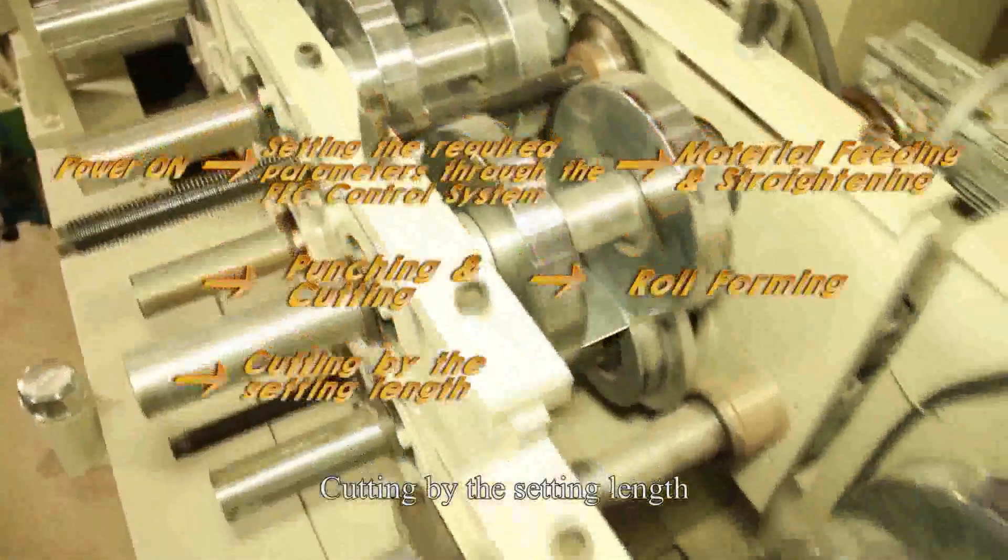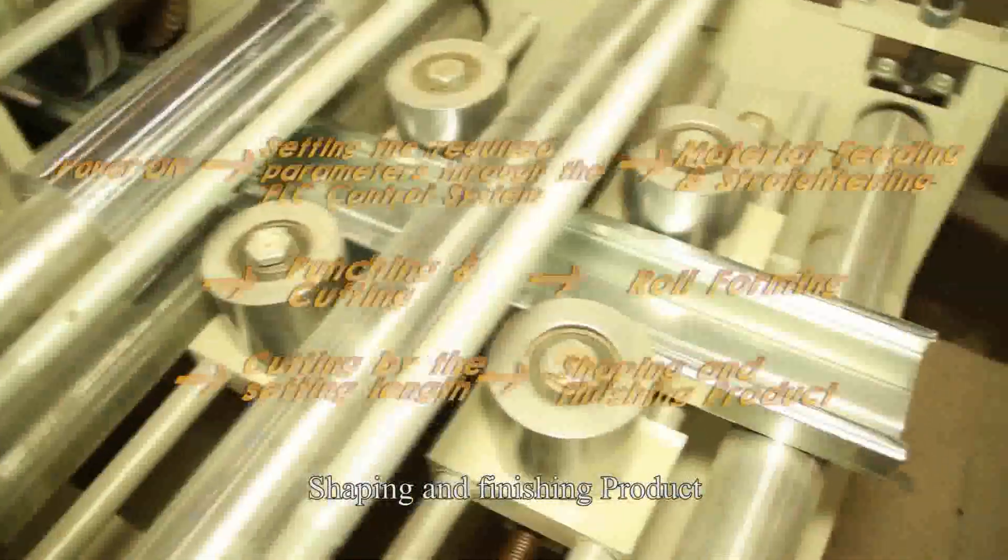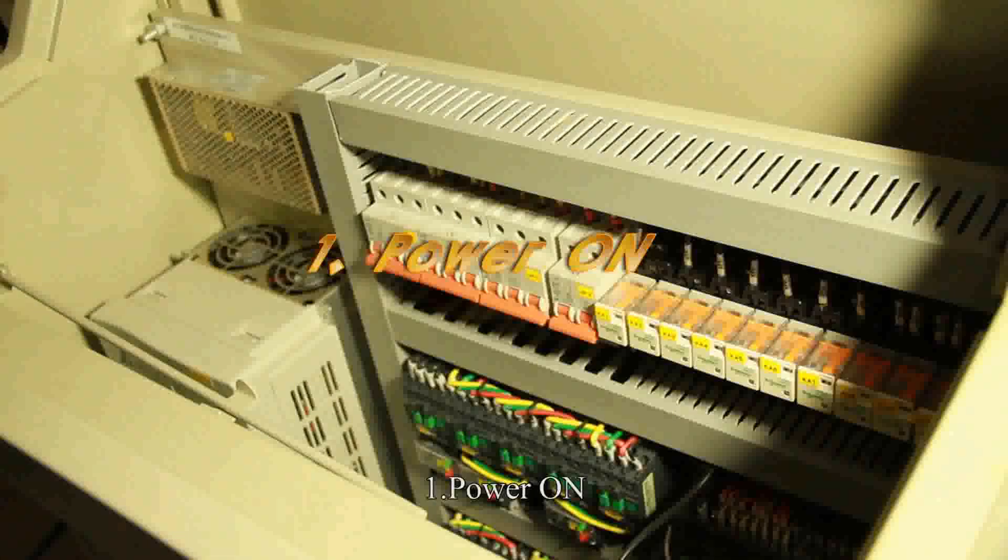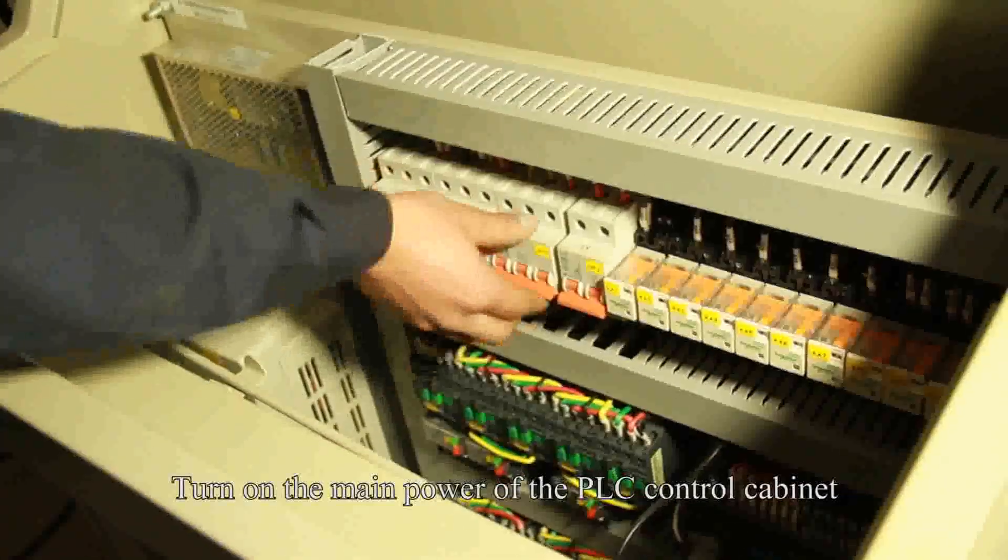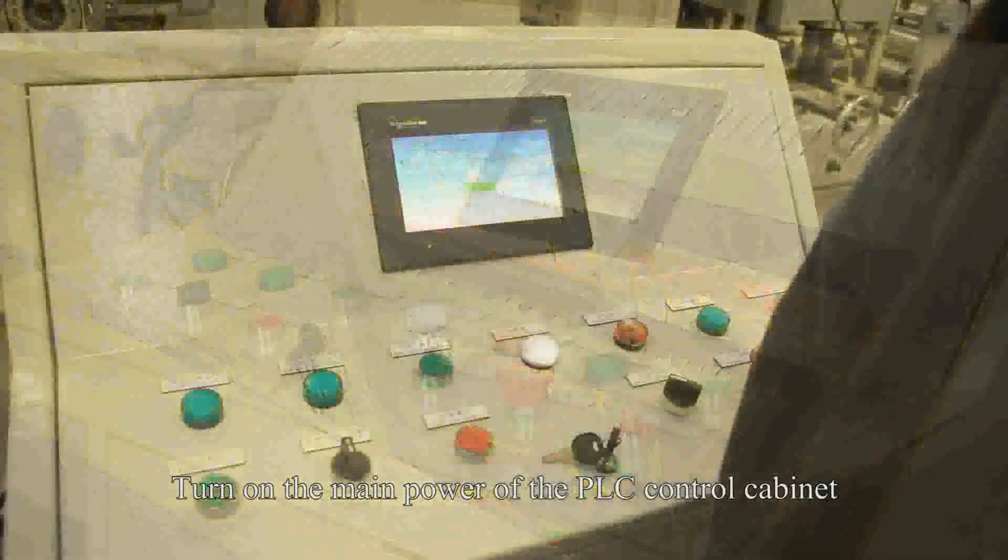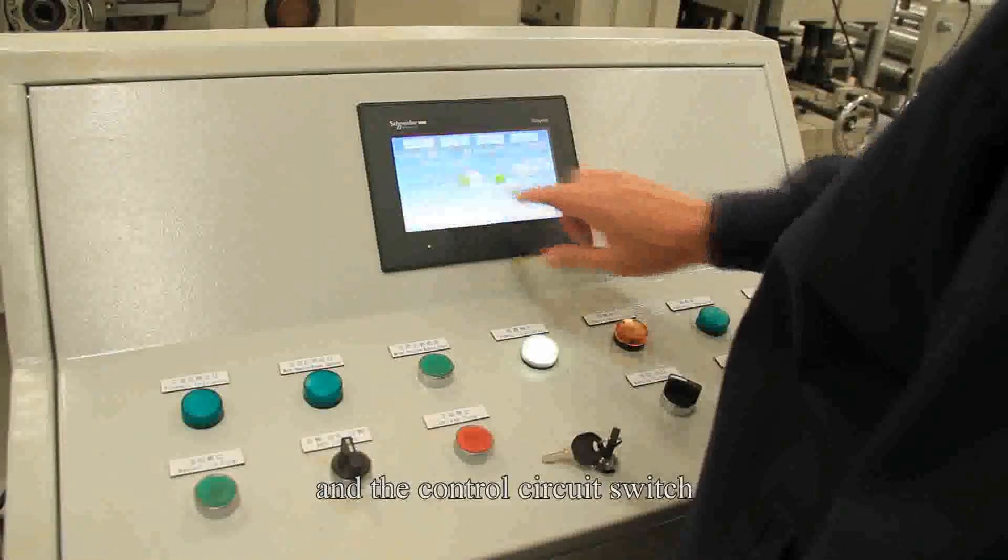Number 1: Power On. Turn on the main power of the PLC control cabinet and the control circuit switch.